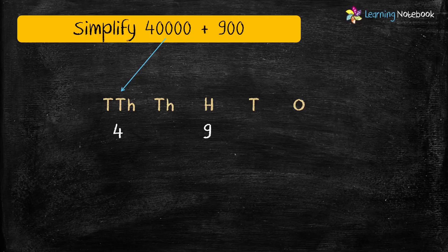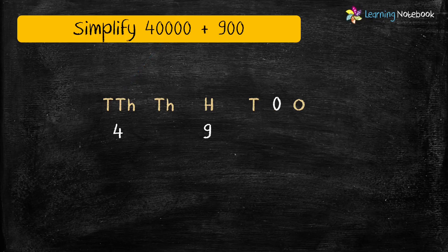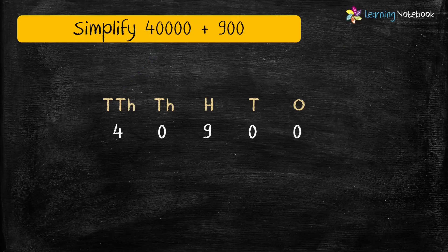So students, did you notice that there is nothing mentioned about the number at the 1's, 10's, and 1,000's place? So it means the digit at all these three places will be 0. Therefore, the number formed is 40,900.